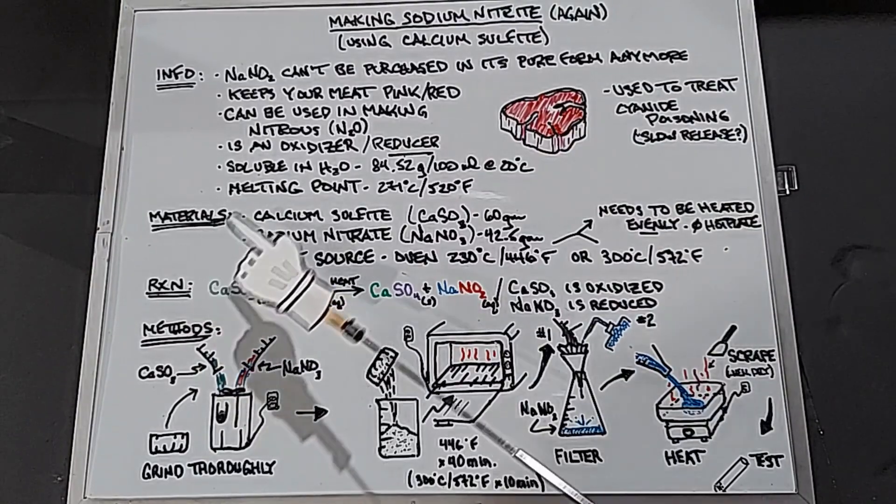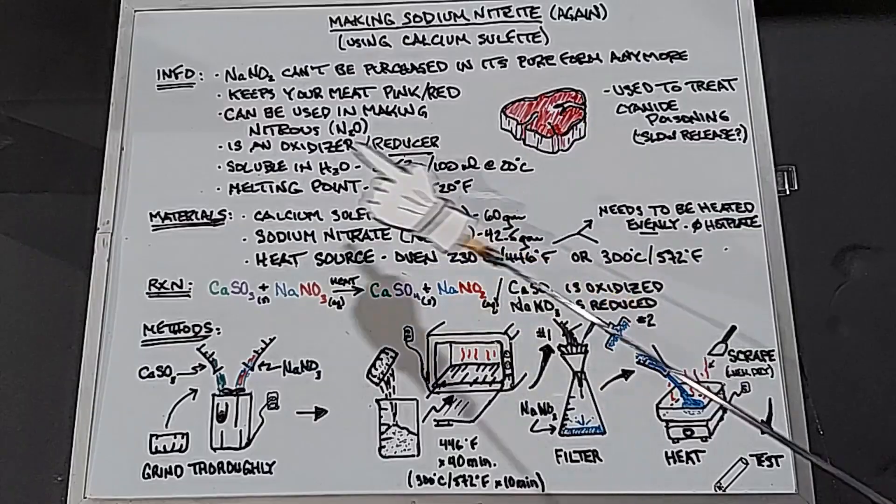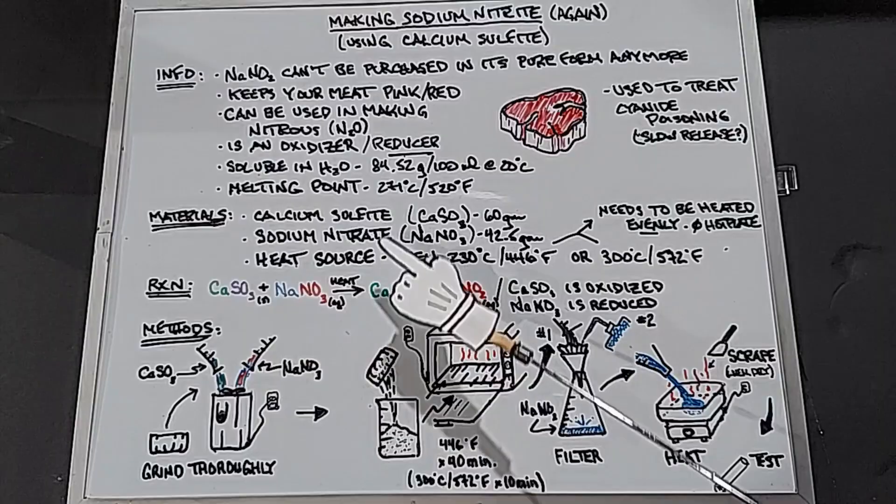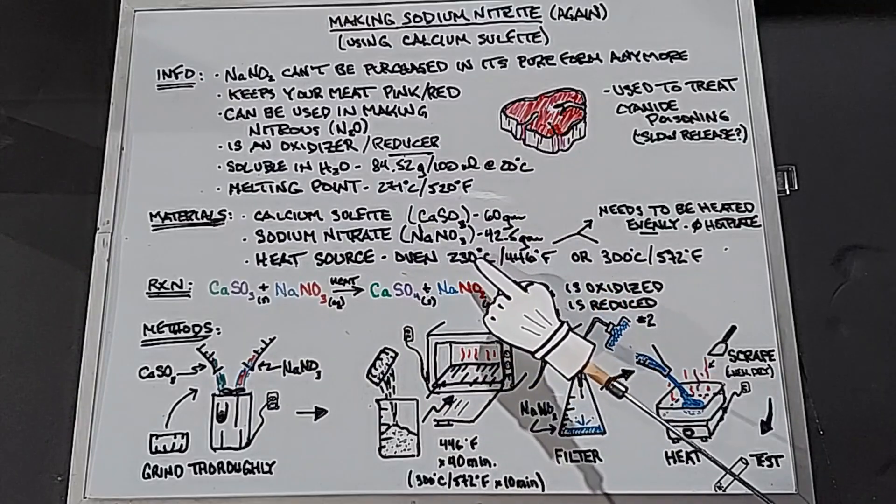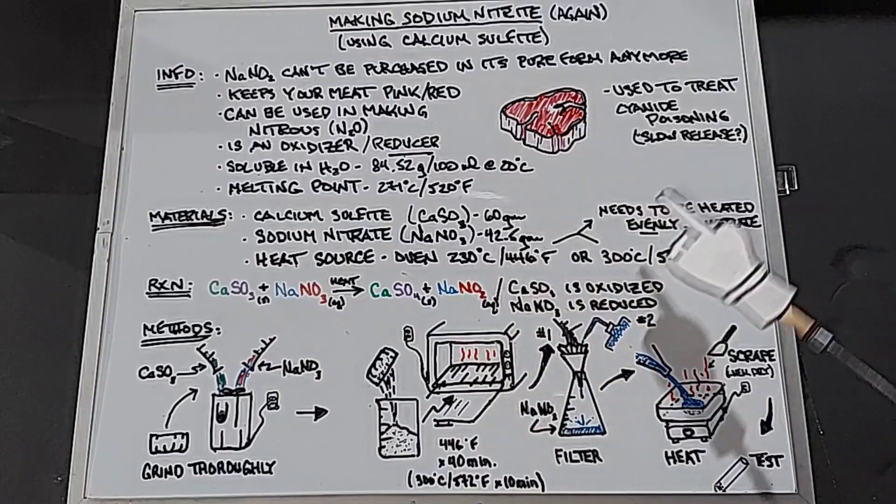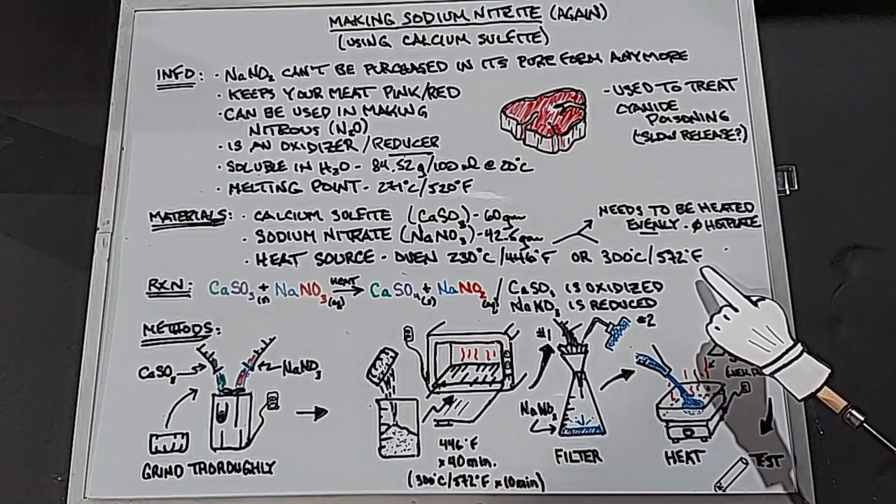Materials we're going to be using are calcium sulfite, again done in a previous video, 60 grams; sodium nitrate, 42 and a half grams; and a heat source. We can either use an oven that will reach 230 degrees Celsius, which is 446 degrees Fahrenheit, or we have a really good oven that reaches 300 degrees Celsius, which is 572 degrees Fahrenheit.